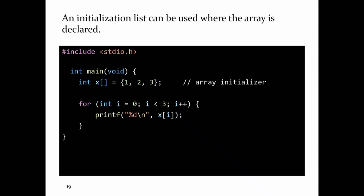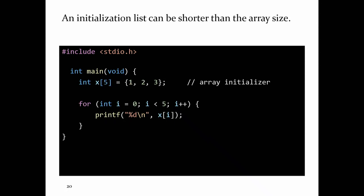If you're declaring a local array and you know the elements, you can use an initialization list with braces and commas separating the elements — similar to Java. You don't have to specify the size; the compiler infers it from the list. So int x[] = {1, 2, 3} makes an array of length 3. If you do specify a size, the initialization list must contain that many elements or fewer. So int x[5] = {1, 2, 3} makes an array of length 5: the first three values are 1, 2, 3, and all remaining values are set to zero.